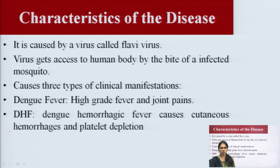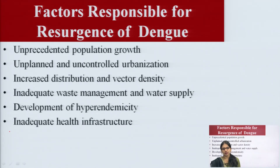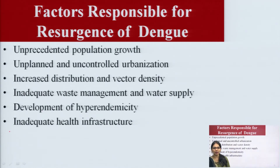Dengue is caused by Flavivirus, which enters the human body through the bite of an infected mosquito, causing three types of clinical manifestation: Dengue fever with high-grade fever and joint pain, Dengue hemorrhagic fever (DHF) caused by cutaneous hemorrhage and platelet depletion. Factors responsible for the resurgence of Dengue include unprecedented population growth, unplanned urbanization, increased vector density, inadequate waste management and water supply, and development of hyperendemicity and inadequate health infrastructure.